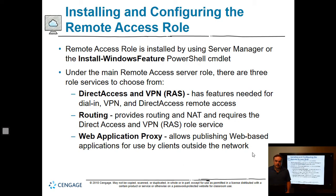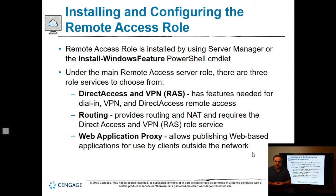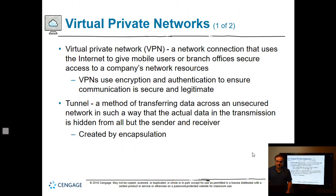To install the remote access role, go to Server Manager and either use Add Roles and Features or the Install-WindowsFeature PowerShell cmdlet. There are three role services: Direct Access and VPN (required even if you're only using VPN, not Direct Access), Routing, and Web Application Proxy — which publishes web-based applications for use by clients outside your network, though we won't be covering that.